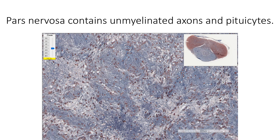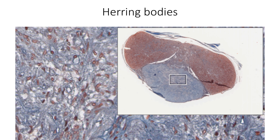Pars nervosa shows unmyelinated axons that form the hypothalamo-hypophysial tracts. These axons end on the fenestrated sinusoidal capillaries of pars nervosa to release their secretions. Pars nervosa also shows supporting cells known as pituicytes, which are modified astrocyte-type glial cells. The neurosecretory vesicles within these axons contain either antidiuretic hormone or oxytocin. These vesicles accumulate within the axons to form dilatations called Herring bodies, which appear as small islands of dark-colored masses or as eosinophilic islands in H&E stained sections.